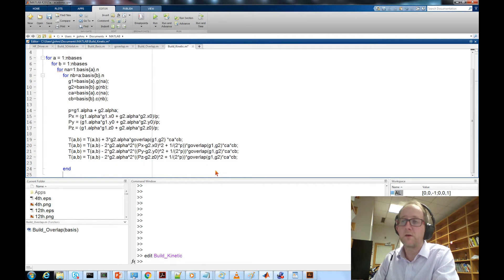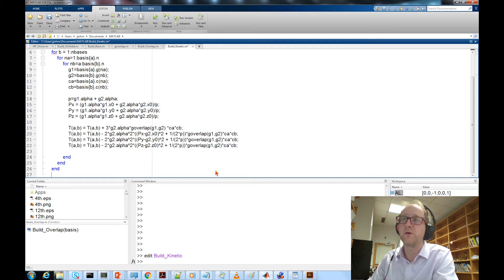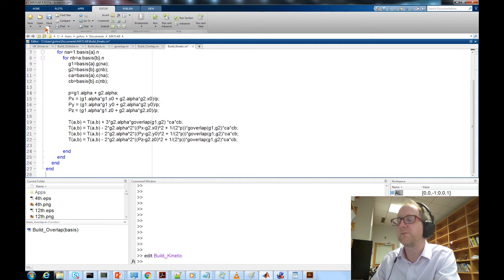Now we finish looping over the primitives in basis function b, finish looping over the primitives in basis function a, loop over all Gaussian functions b and all basis functions a. And we're good.